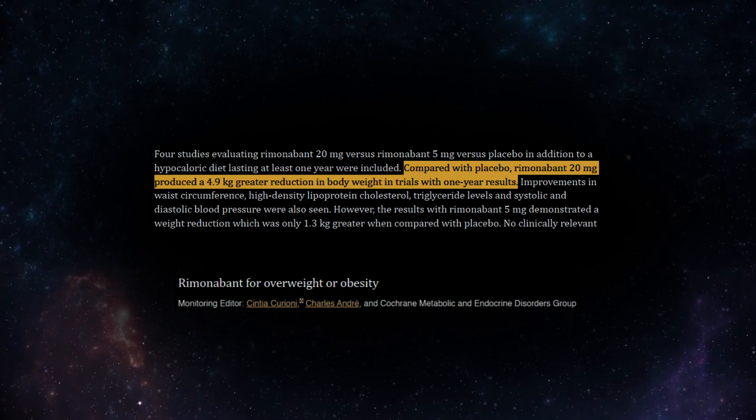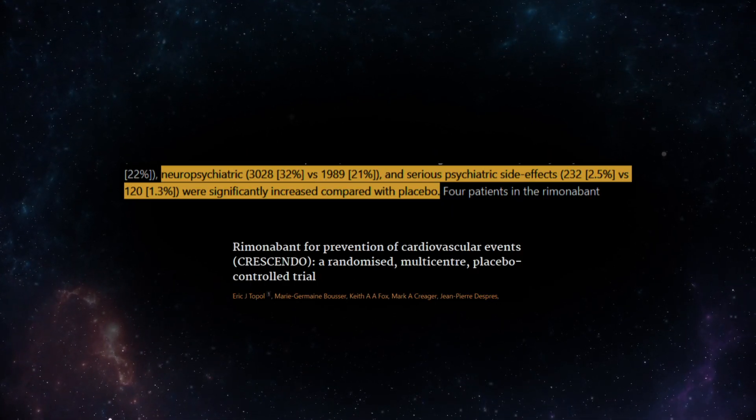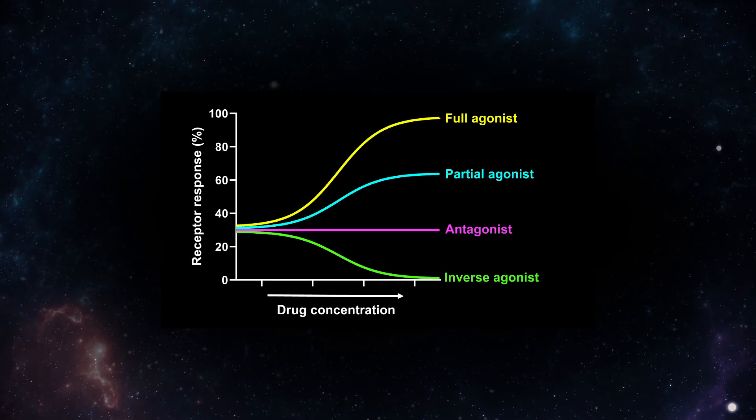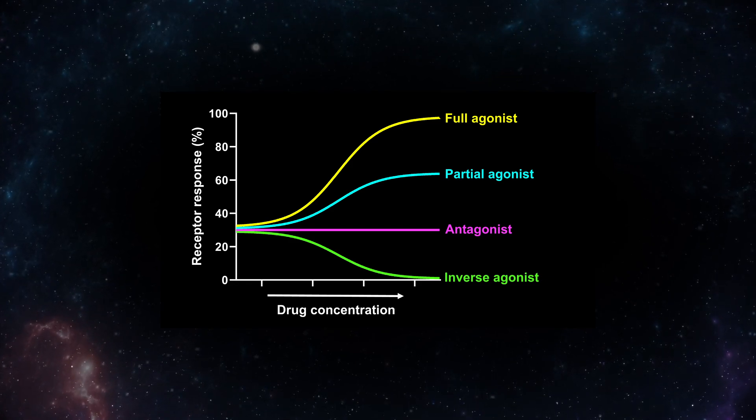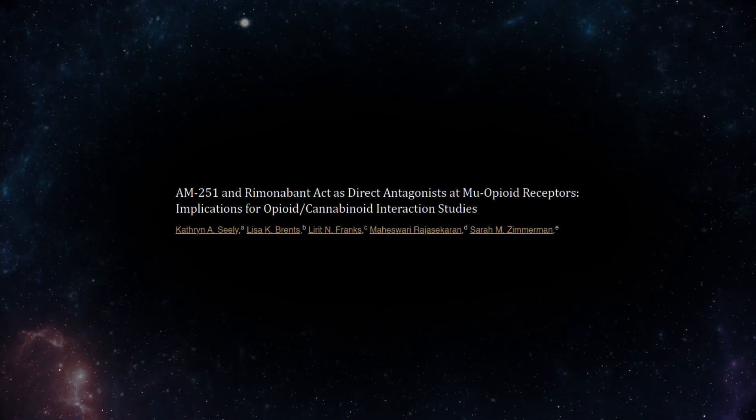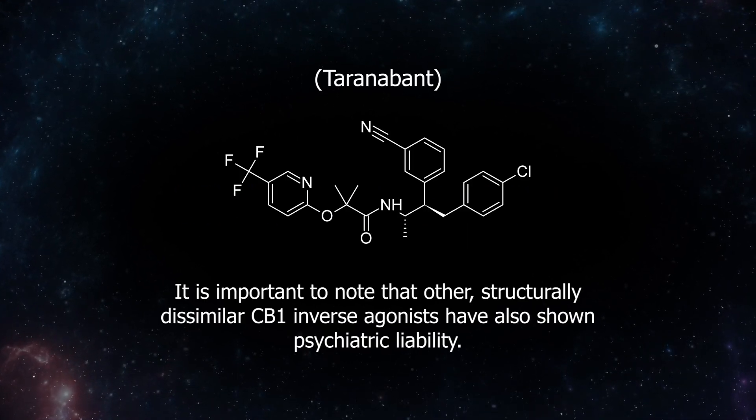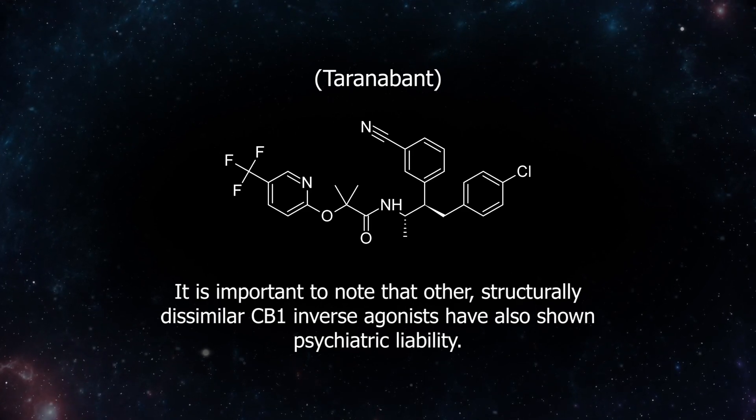The drug was effective at reducing food intake but caused psychiatric disturbances in a third of all patients, with four patients in the Rimonabant group committing suicide. Initially, this effect was attributed to its inverse agonism of the cannabinoid receptor. However, it was later discovered that Rimonabant was an antagonist to the mu opioid receptor. It's unknown to what degree this may have contributed to the neuropsychiatric side effects of the drug.